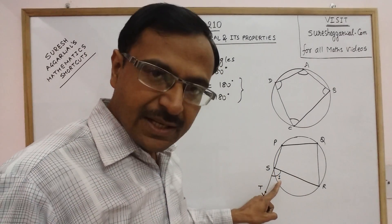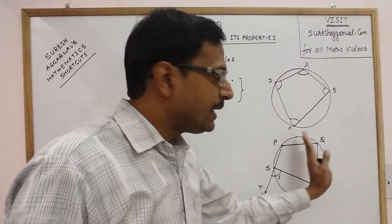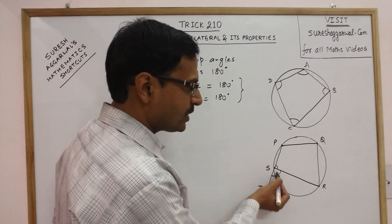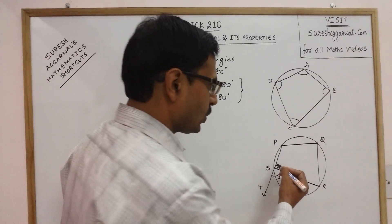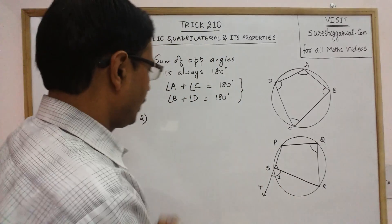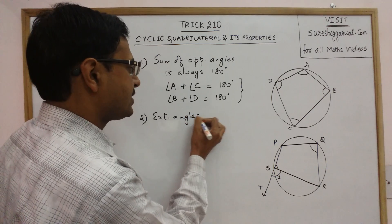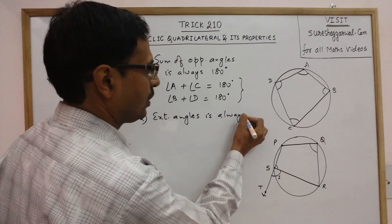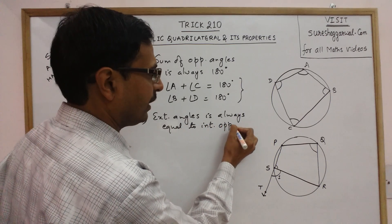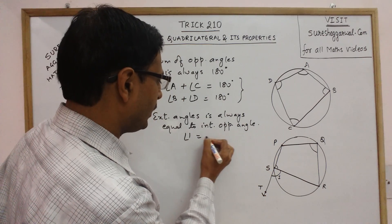This exterior angle — angle 1 — made by producing side PS to point T will always be equal to the interior opposite angle. The angle adjacent to angle 1 is angle P, so the opposite angle is angle Q. Therefore the exterior angle is always equal to the interior opposite angle, and in this figure angle 1 equals angle Q.